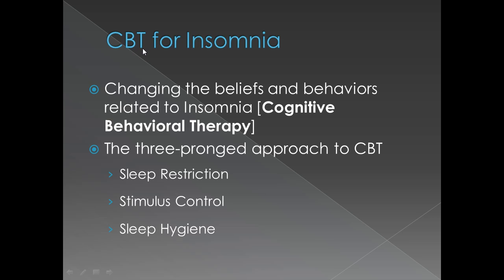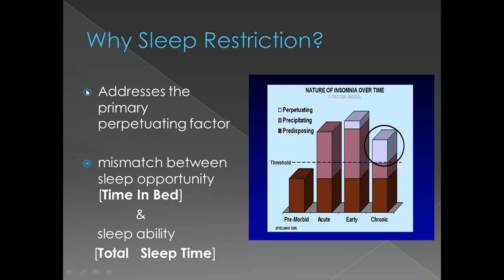Cognitive Behavioral Therapy for Insomnia, or CBT-I, changes the beliefs and behaviors related to insomnia. There is a three-pronged approach to CBT: sleep restriction, stimulus control, and sleep hygiene. Sleep restriction addresses the primary perpetuating factor — it looks at the mismatch between sleep opportunity, or total time in bed, and sleep ability, that is the total sleep time. The perpetuating factors are continued when you have such behaviors.